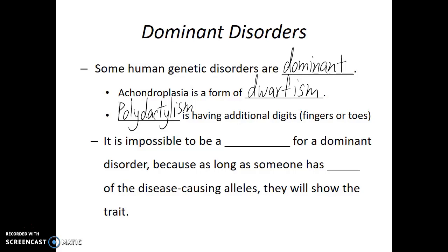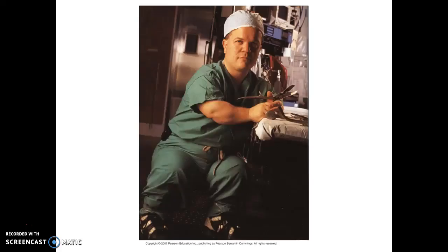For dominant genetic disorders, it is impossible to be a carrier for that genetic disorder, because as long as someone has one of the disease-causing alleles, they will end up showing the trait. Here's a photo of a surgeon who has achondroplasia.